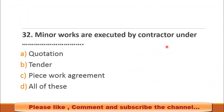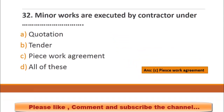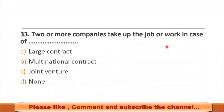Question number 32: Minor works are executed by contractor under — choices: a) quotation, b) tender, c) piece work agreement, d) all of these. The right choice is c) piece work agreement. MCQ number 33: Two or more companies take up a job or work in case of — choices: a) large contract, b) multinational contract, c) joint venture, d) none. The right choice is c) joint venture.